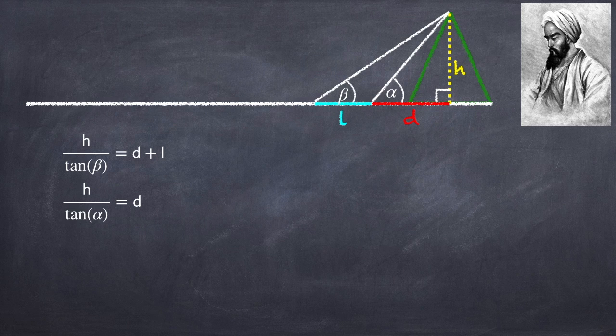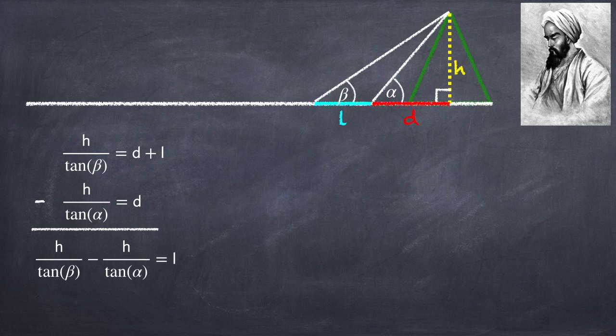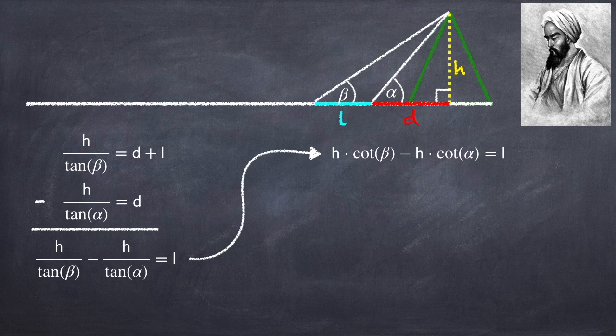Now recall I don't know what d is, so let's subtract these two equations in order to get rid of it. And this is going to give us h over tan beta minus h over tan alpha equals l. One over tangent is cotangent. So this can be rewritten as h times cotangent of beta minus h times cotangent of alpha equals l.